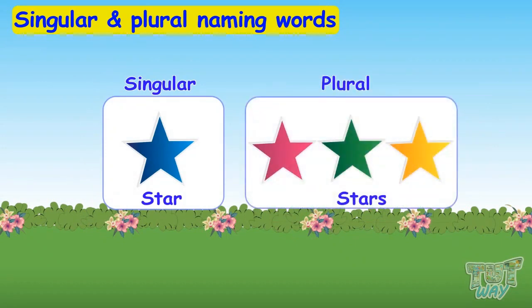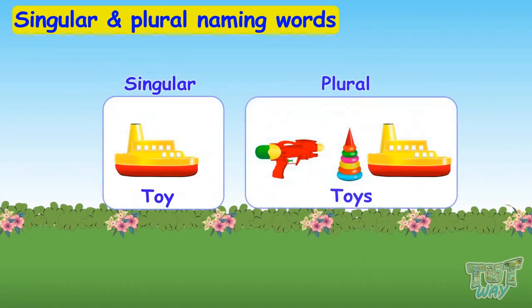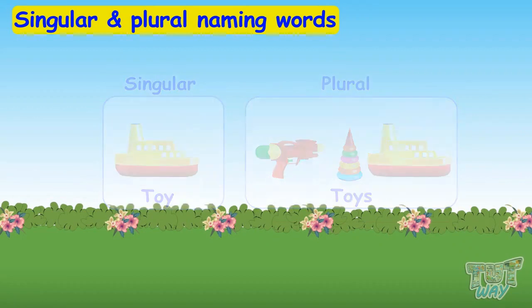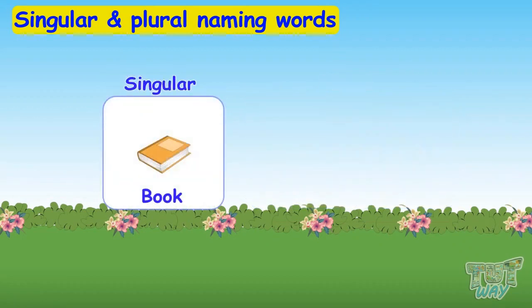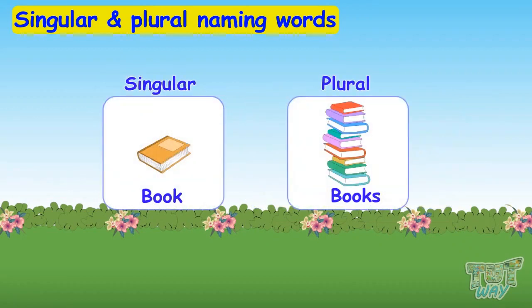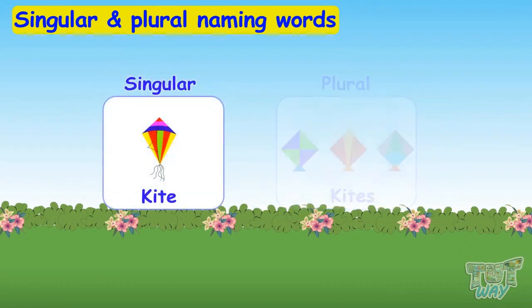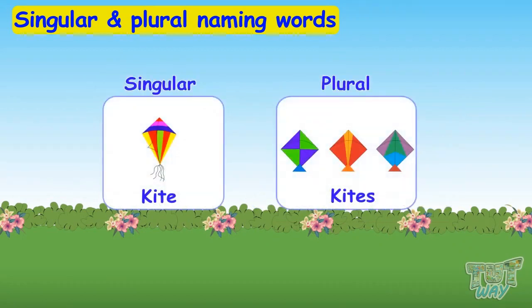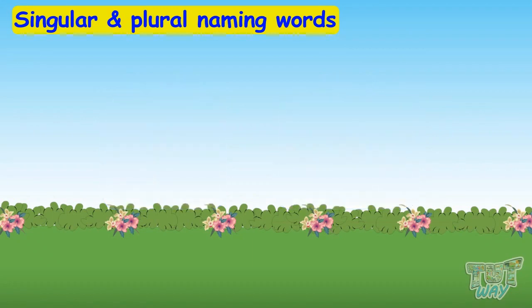Star, stars. Toy, toys. Book, books. Kite, kites. You see that we have added S to the singular naming word to make it plural.